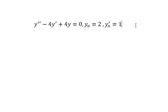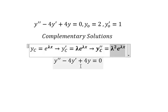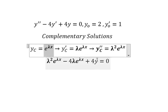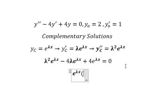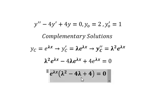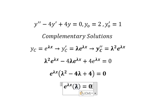Now we go to the next one and apply the same method. We put this term here, this one here, and this one here. Then we perform factorization on the characteristic equation.